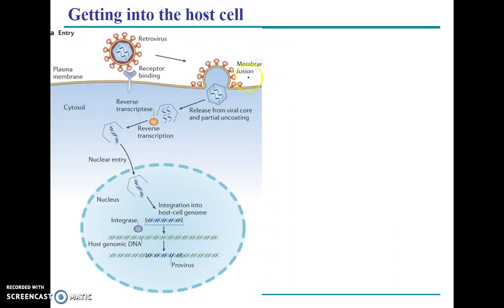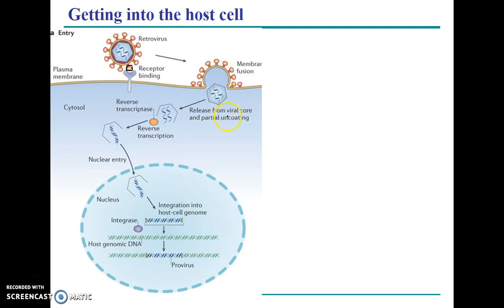This shows how a virus gets into the cell. This is a retrovirus, and we'll talk about why it's a retrovirus on the last slide. This is the cell it's infecting. The retrovirus has glycoproteins that can bind to a receptor on the cell it's trying to infect. That binding triggers the cell to bring the virus in through endocytosis — so by having a glycoprotein that matches the receptor, it induces the cell to bring it inside.